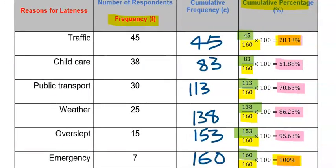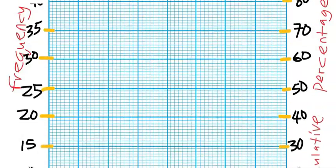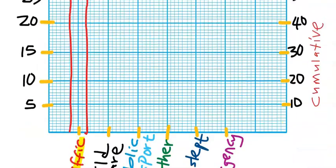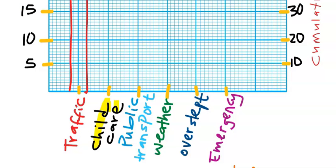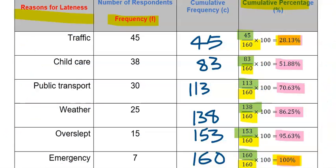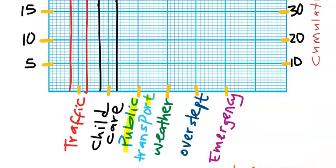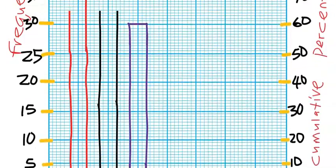Next, we are going to plot the frequency against reasons for lateness, and it's going to be a bar chart. Let's start with traffic, which is 45. The frequency for traffic is 45, which is this point. Hence, this is a bar for traffic. Next, let's consider child care, which is 38. And for child care, 38 is somewhere here. This is a bar chart for child care. Next, let's consider public transport, which is 30. This is public transport. And 30 is here. This is a bar chart for public transport.